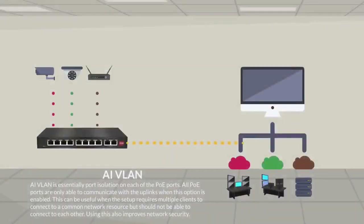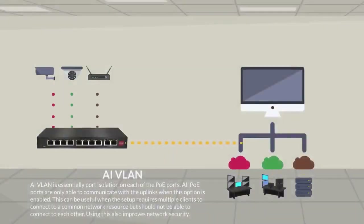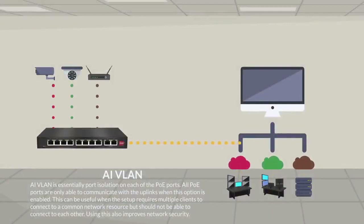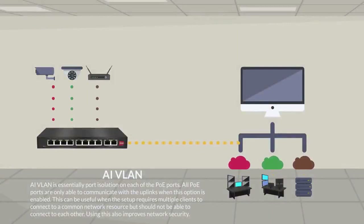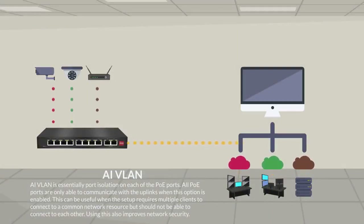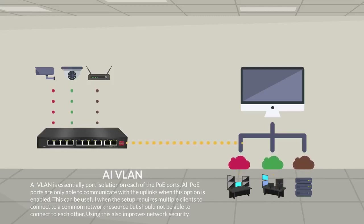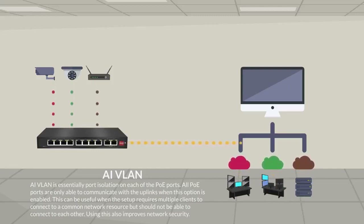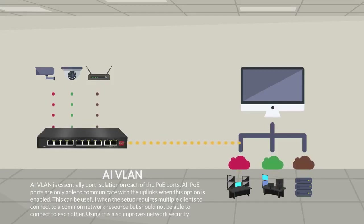AI VLAN is essentially port isolation on each of the PoE ports. All PoE ports are only able to communicate with the uplinks when this option is enabled. This can be useful when the setup requires multiple clients to connect to a common network resource but should not be able to connect to each other. Using this also improves network security.